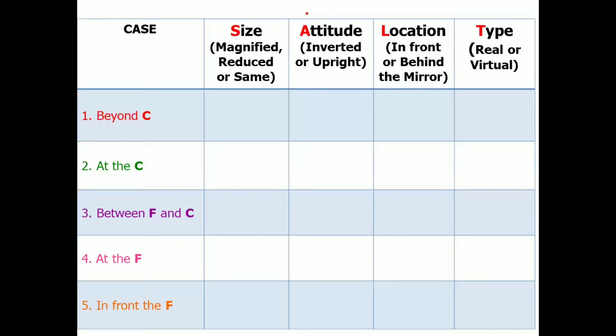Previously, we already used case number one as our example for the discussion. We have learned that if we place the object beyond C or center of curvature, then the image will be reduced in size. It is inverted. It is formed in front of the mirror. Thus, it is a real image.